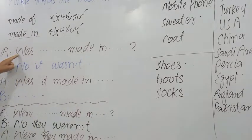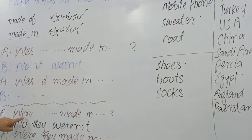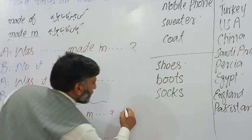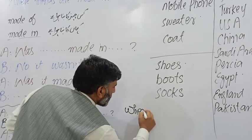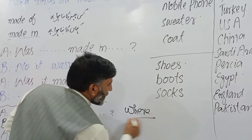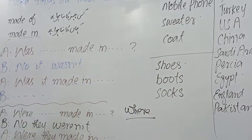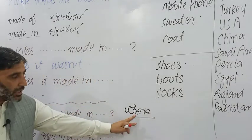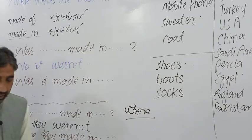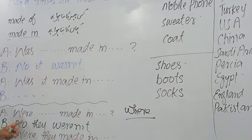Were. Aur is ki talaffuz were kahenge. Bazan haem is ki talaffuz wear karte hain — to wear to hota hai jab w-h-e-r-e ho, jab H ho. To wear ki talaffuz hai — pronunciation hai — aur yeh were hai.